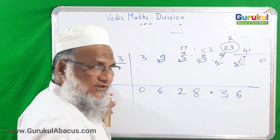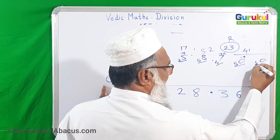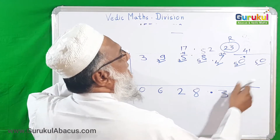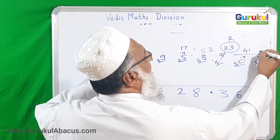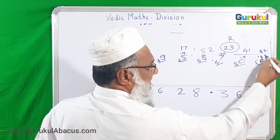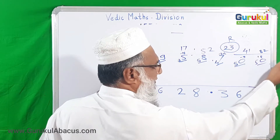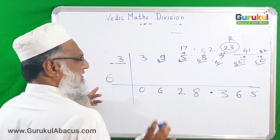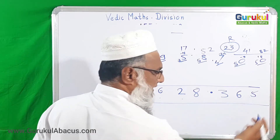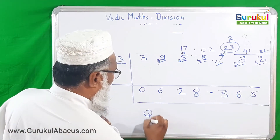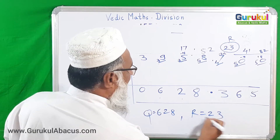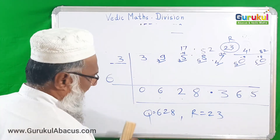From 5 we subtract 6 threes equals 18 from 50, giving 32. Then 6 fives are 30, remaining 2. We stop here with three decimal digits. The answer is 628.365. Alternatively, the quotient is 628 and the remainder is 23. This is the method. We now take one more example for even more clarity.